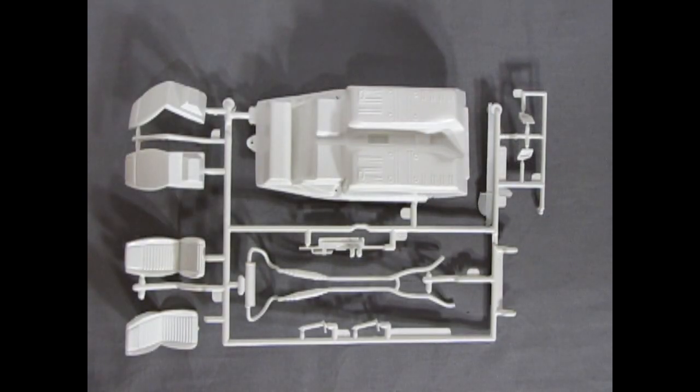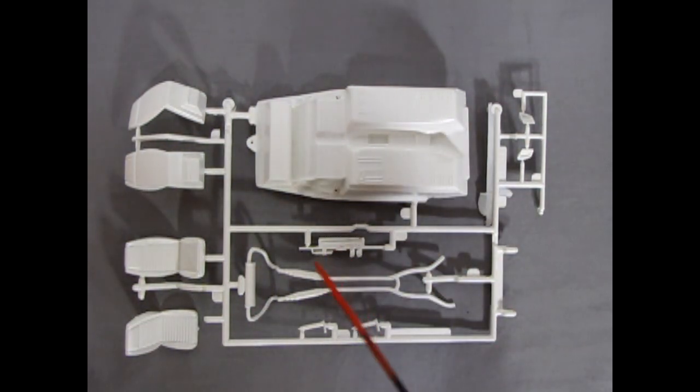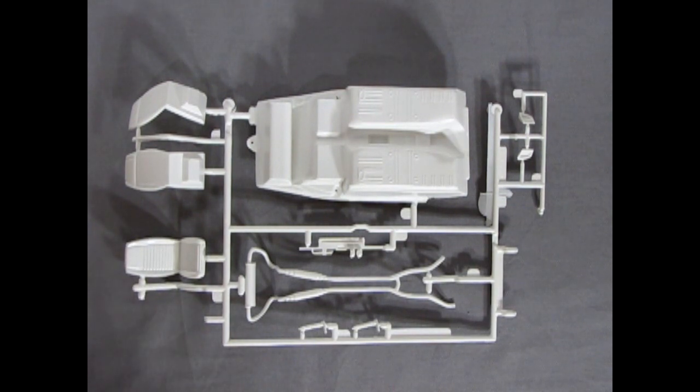Now the first set of parts that I want to show you is of course our interior bucket, the scoops, the top of the radiator, our exhausts, and our front springs and our suspension, as well as the seats here. This one is loose. So I'm just going to move it off camera.